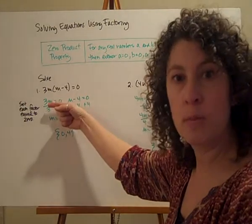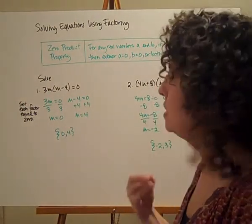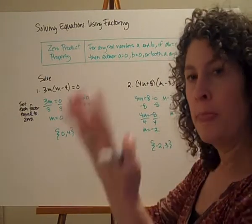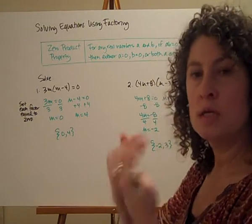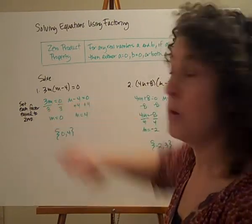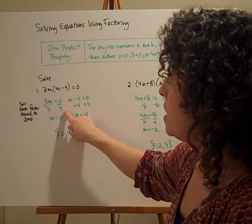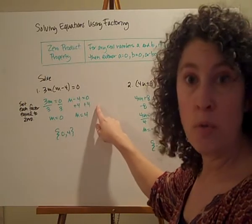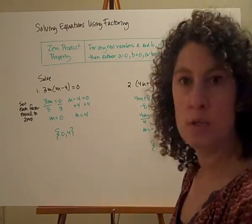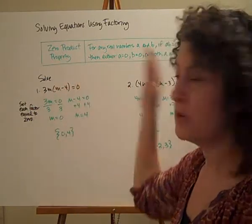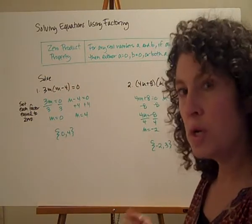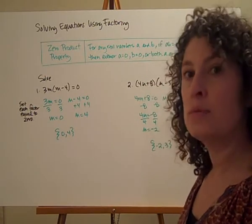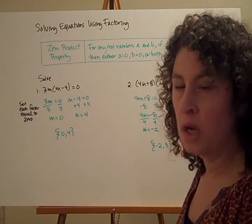Notice what we've done — I've broken this up into equations that we know how to solve. That's a lot of what we do in algebra: take this complicated thing and use our algebra properties to break it down into something we do know how to solve. I divide by 3 on both sides and get m equals zero, one possible solution. Then I add four and get m equals four. So I have two possible solutions: zero and four. If I go back to my original equation, I should always be able to make those work. I want to check your solutions.